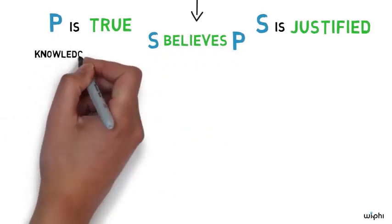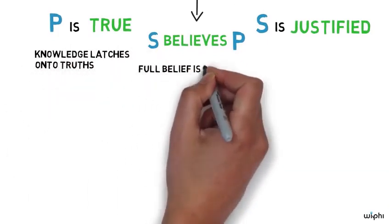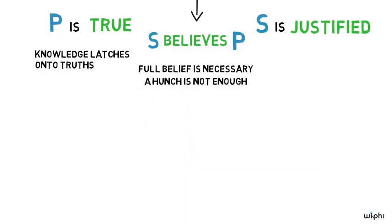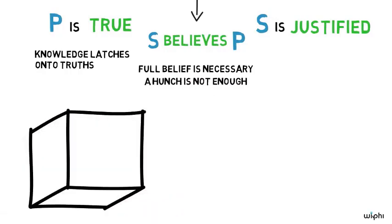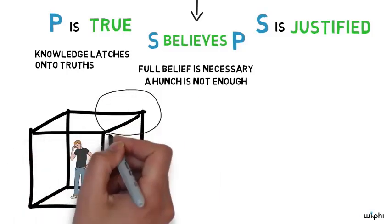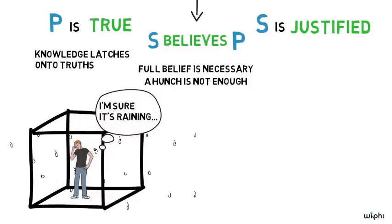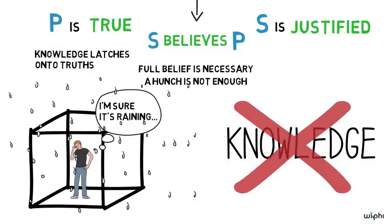The first two conditions are pretty uncontroversial. Knowledge only latches onto truths, and you need full confidence or belief to know — if you just have a hunch, that's not enough. We need the third condition because knowledge demands more than true belief. You may remember pessimistic Pierre from our first video in this series, who wakes up in a windowless room every day believing that it is raining outside. Even on a day when this pessimistic belief is true, it doesn't seem right to say that he knows that it is raining. He lacks justification.